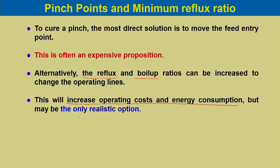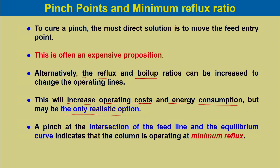Increasing reflux or boil-up ratio should be the only realistic option to cure the pinch point. A pinch at the intersection of the feed line and the equilibrium curve indicates that the column is operating at minimum reflux. The feed line crosses the equilibrium curve, and if the operating line also intersects at that point, that pinch point represents the condition where the column is operating at minimum reflux.